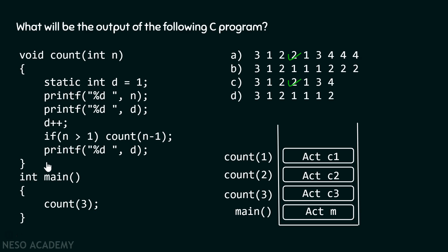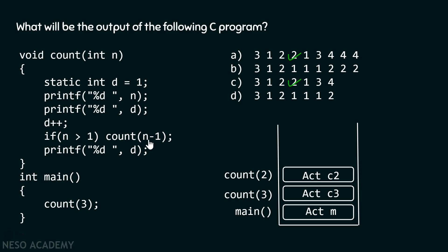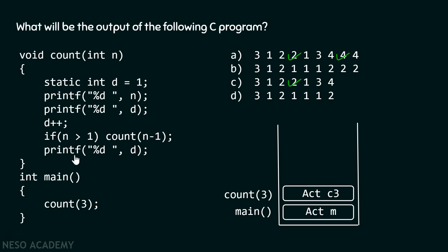After this printf, there is no statement, so we return back to the caller. We are at count(1), and its activation record gets popped out of the stack. We come back to count(2) at the point where we left off. After the recursive call returns, we find a printf function and print the value of d. Since d is a static variable, it retains its value of 4. So 4 gets printed on the screen. Then the activation record of count(2) is popped. We land back at count(3), print d which is still 4, so 4 is printed again.